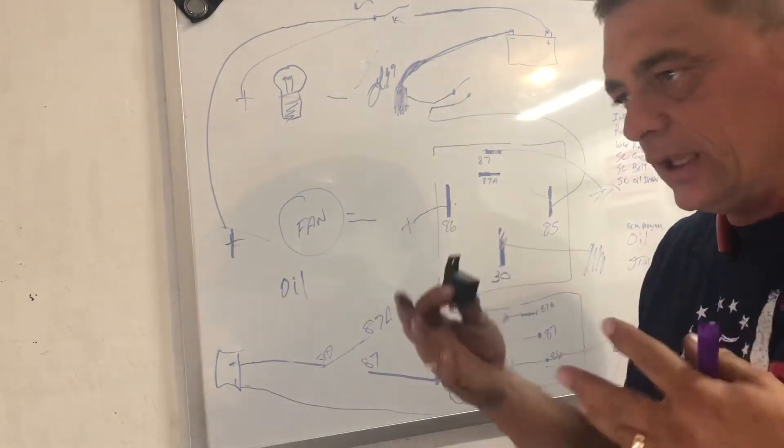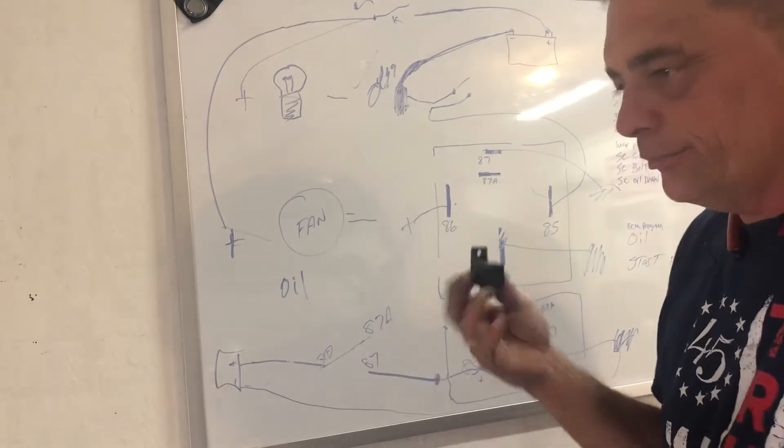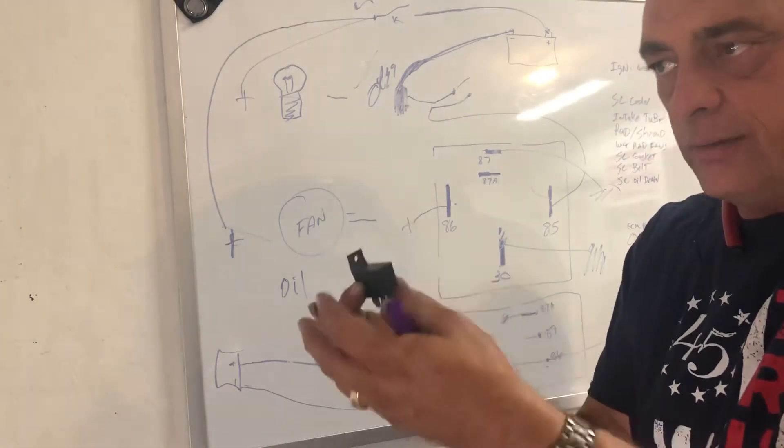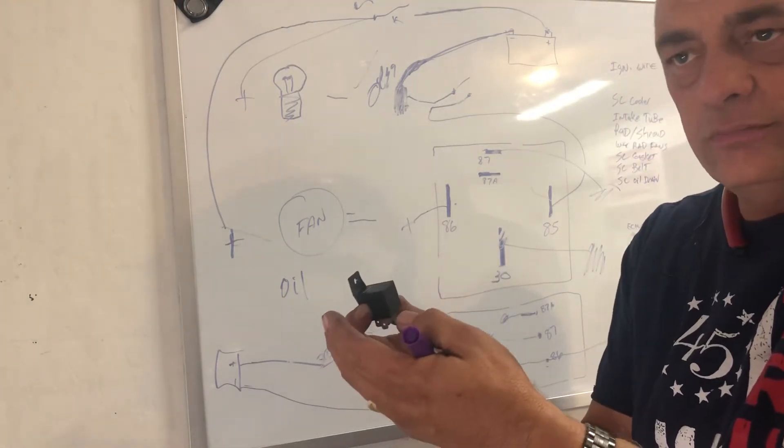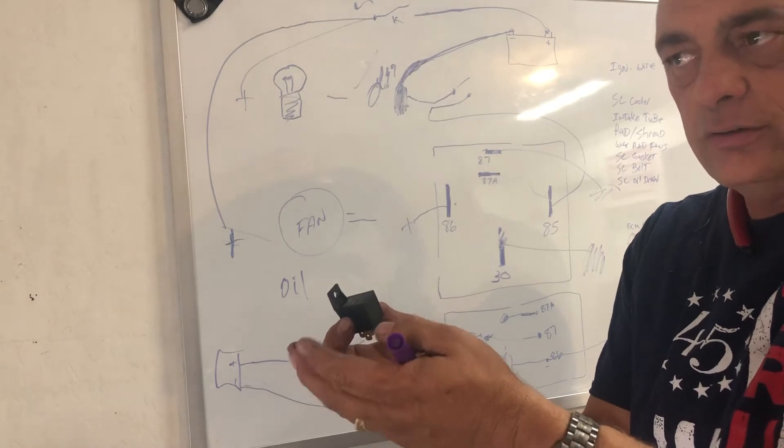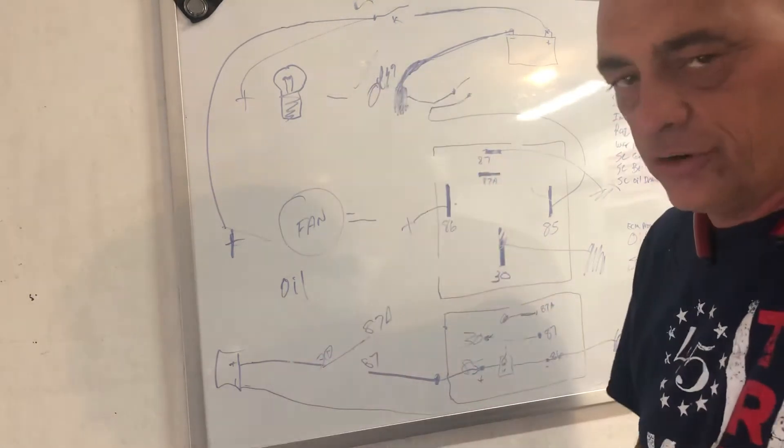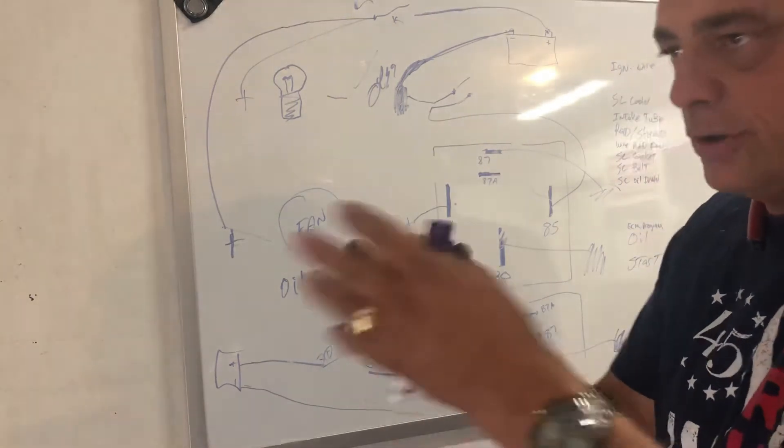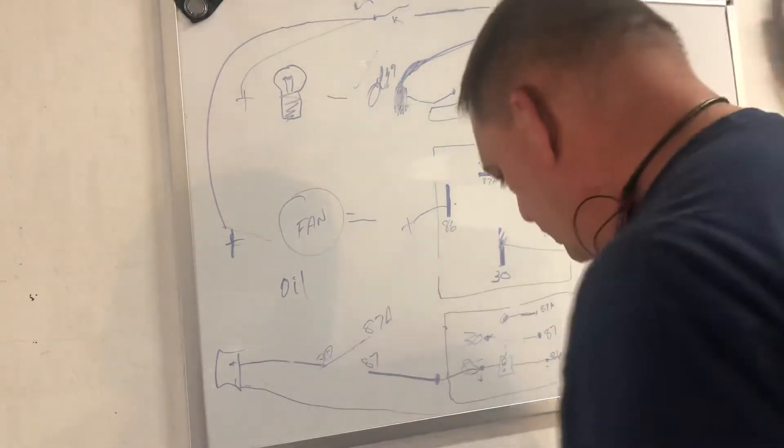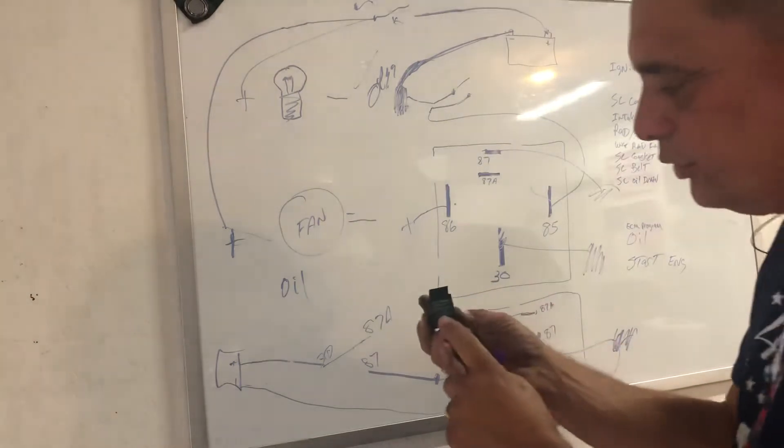Now I'm not teaching you how a relay works. You can look that up on your own. Basically, it takes a small amount of amperage from a small switch that can't handle a large amount and it runs a big amperage item like a fan without burning up the switch.